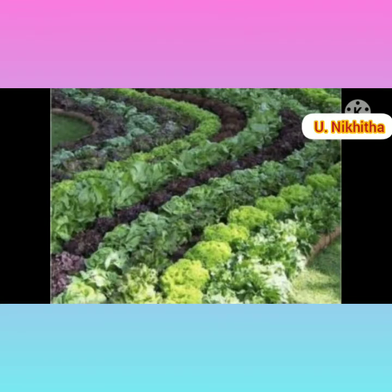Mixed crops: Mixed cropping is a type of agriculture that involves planting two or more plants in the same field. This is called mixed cropping.